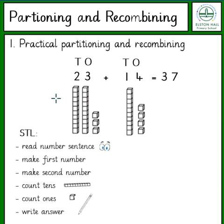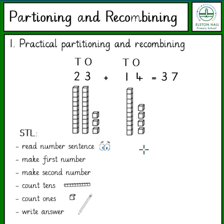For the number sentence 23 plus 14, first of all we're going to make both numbers. The number 23 has 2 tens, so we have 2 ten-sticks and 3 ones, so we have 3 cubes. The number 14 has 1 ten, so we have 1 ten-stick and 4 ones, so we have 4 cubes. We now need to add these together by counting the 10s as 10s and the cubes as 1s.